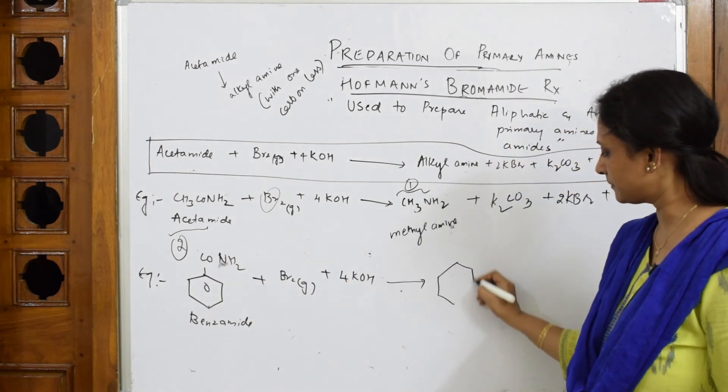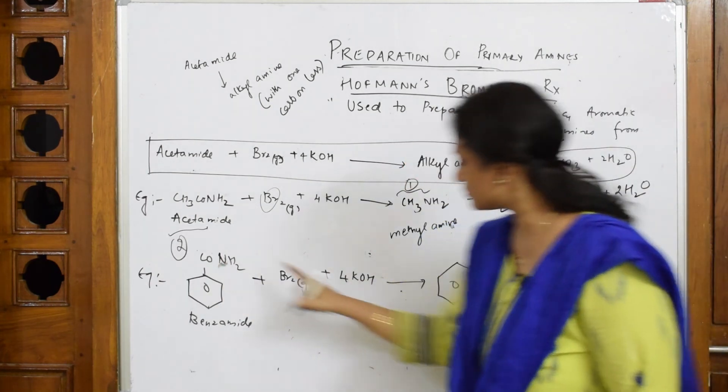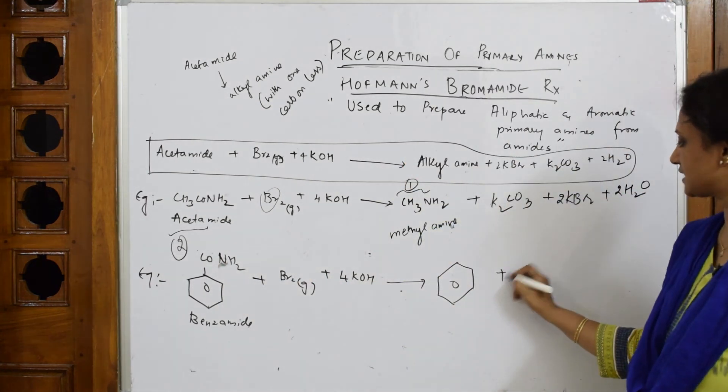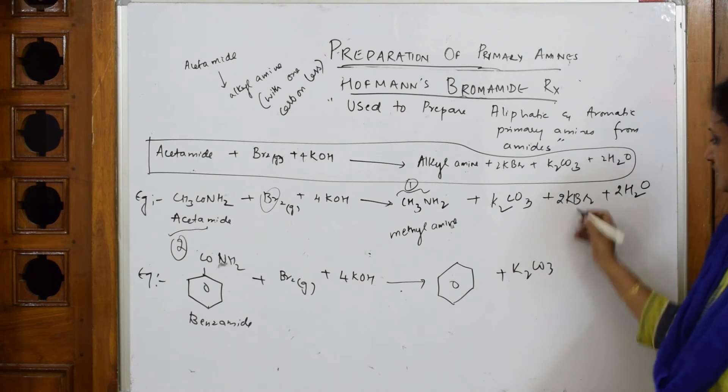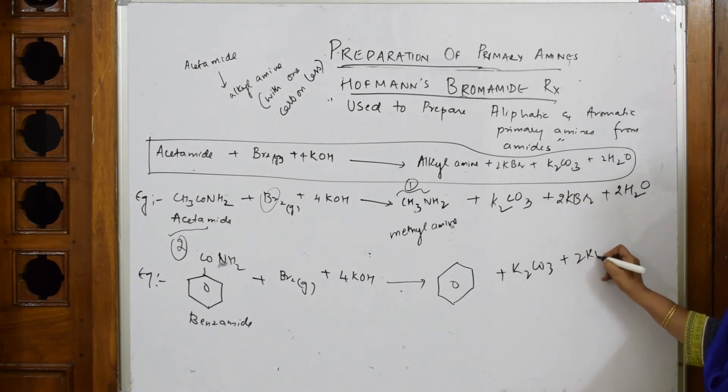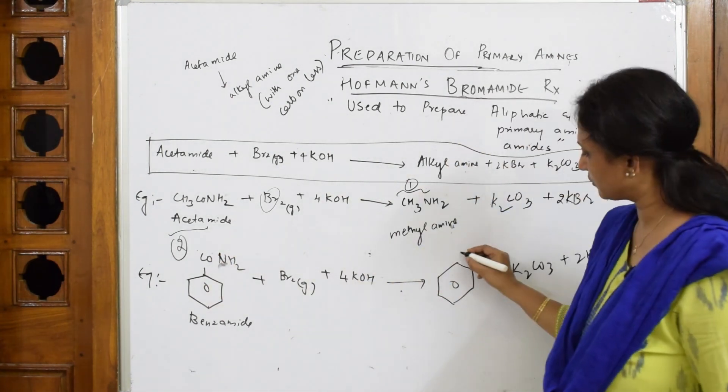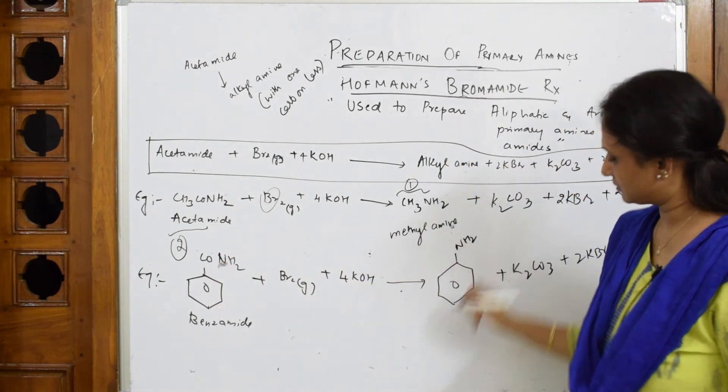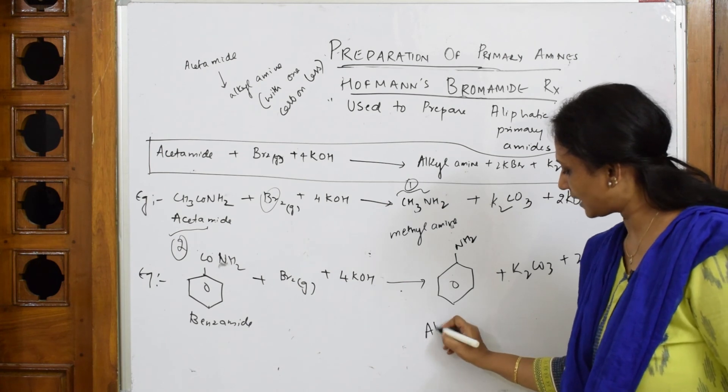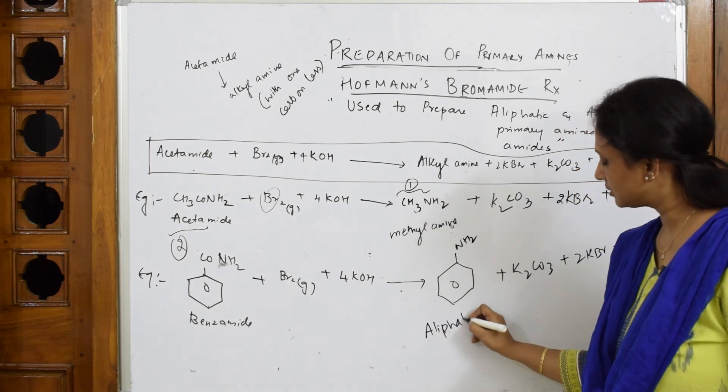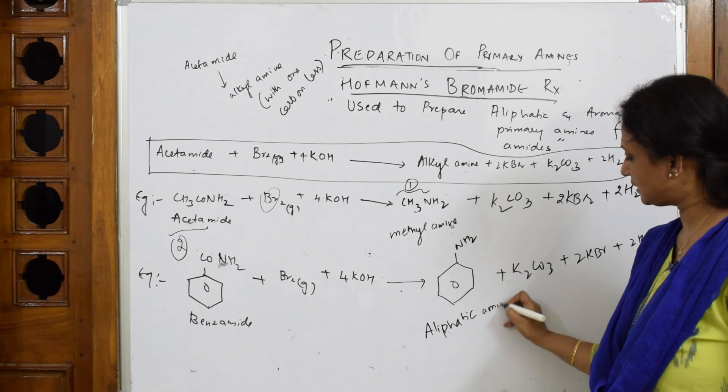Same thing here, you are going to get one carbon less. So you are going to prepare benzene ring, this CO comes out as potassium carbonate as I explained earlier. Products are the same, 2 KBr, 2 H2O. The leftover, this is gone, I'm going to get aniline.